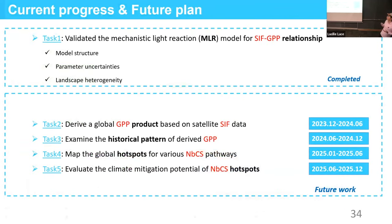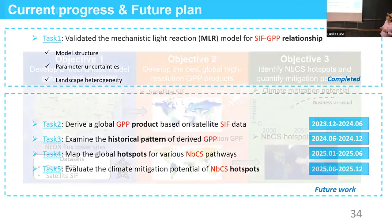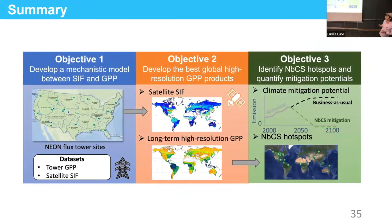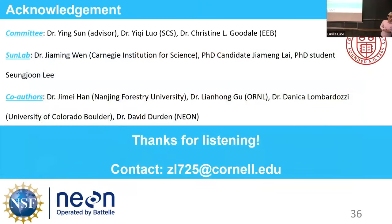Currently, I have completed the first task — validating the mechanistic SIF-GPP model in terms of model structure, parameter uncertainties, and landscape heterogeneity. In the future, I will further explore four additional tasks under these scheduled timelines. In summary, my research diagram shows I will identify NBCS hotspots and quantify their mitigation potential based on the SIF-GPP mechanistic model developed in the first objective and the GPP data set generated in the second objective. I acknowledge my committee members, lab members, and all co-authors. Thank you for listening — I am happy to take any questions.